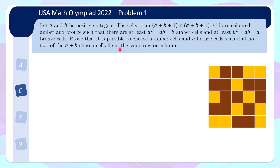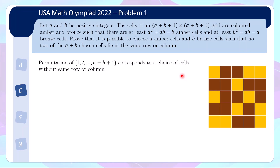When choosing A+B+1 cells — one from each row or column — there's a useful way to depict this using permutations. A permutation of 1 to n, where n is the side of the grid, corresponds to a choice of cells with no repeated row or column. For example, the permutation 2, 3, 1, 5, 4 means: in row 1 pick column 2, row 2 pick column 3, row 3 pick column 1, row 4 pick column 5, row 5 pick column 4. This notation helps organize a choice of cells.